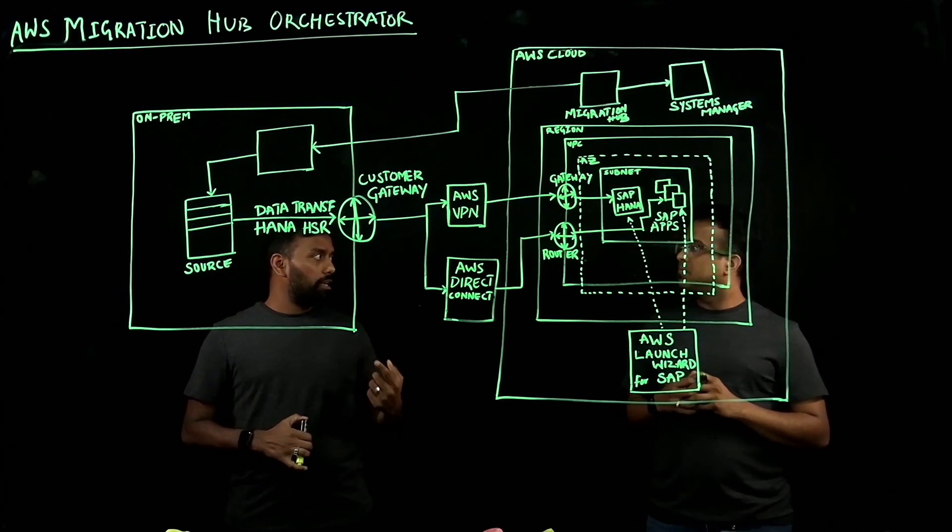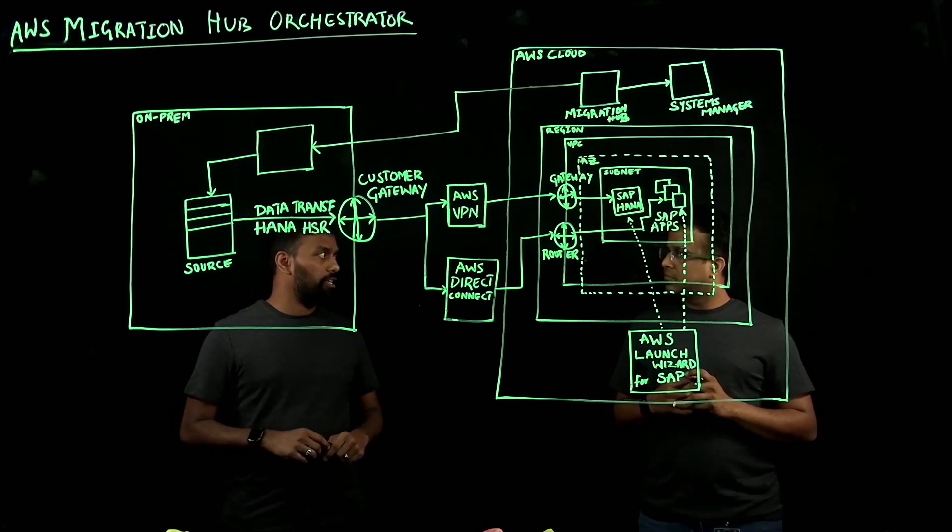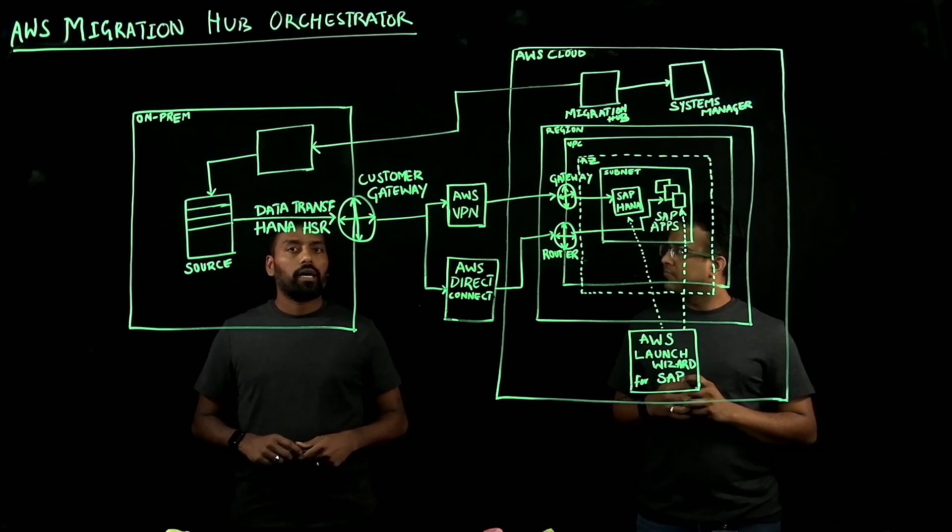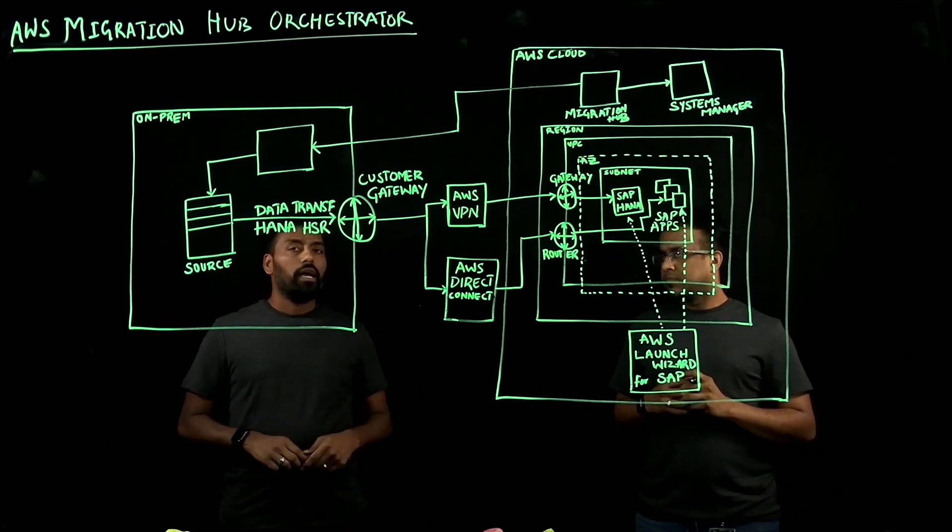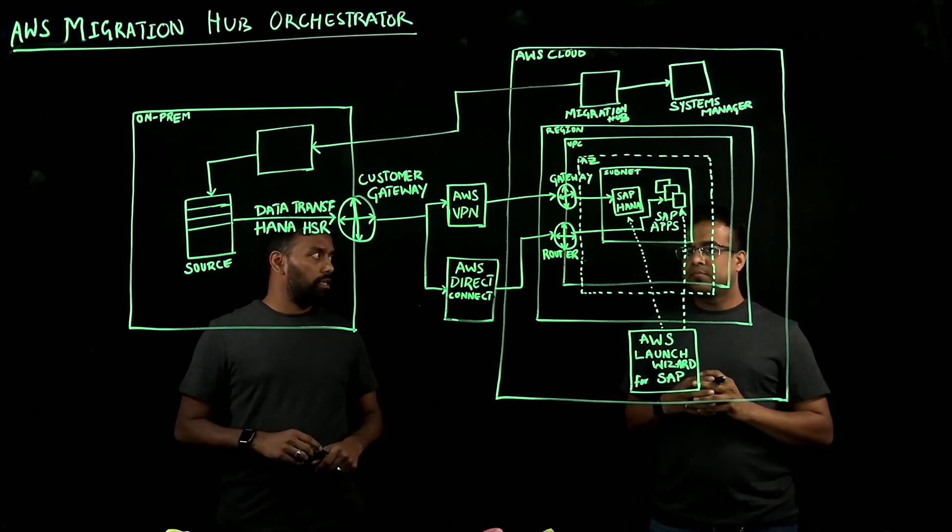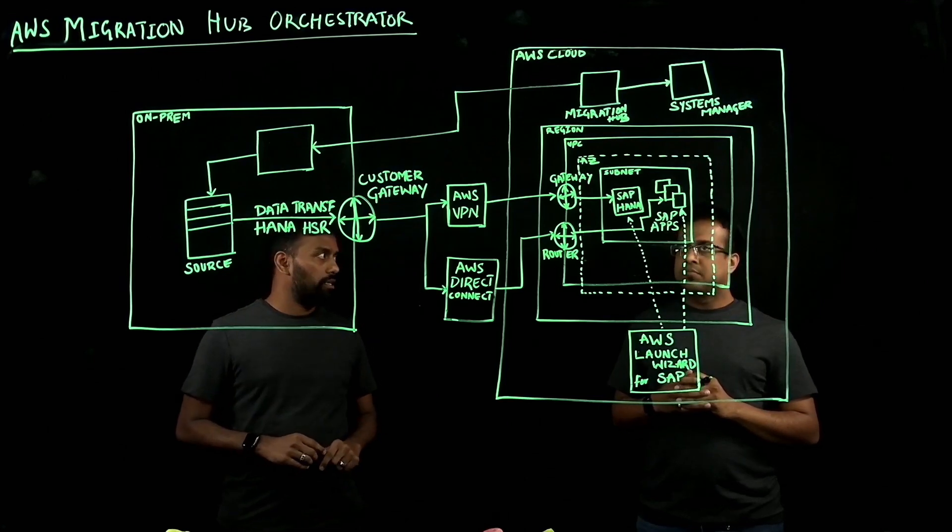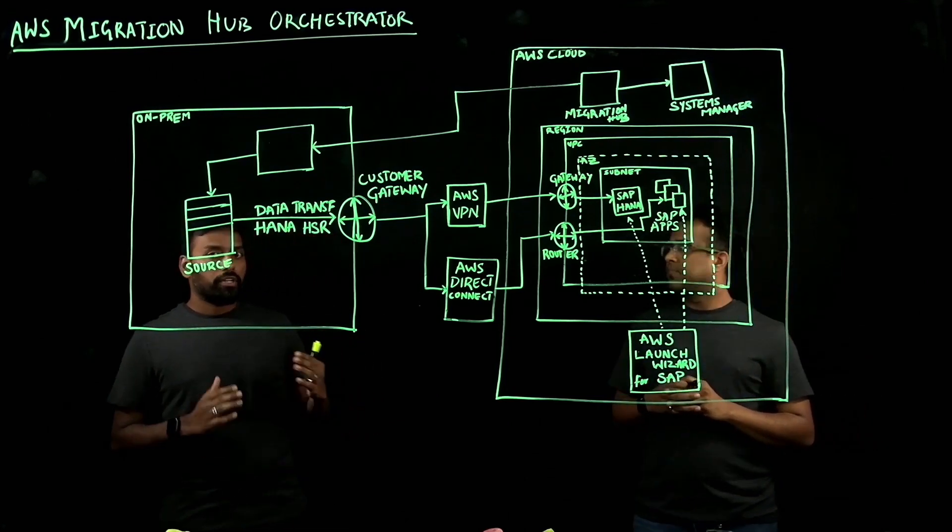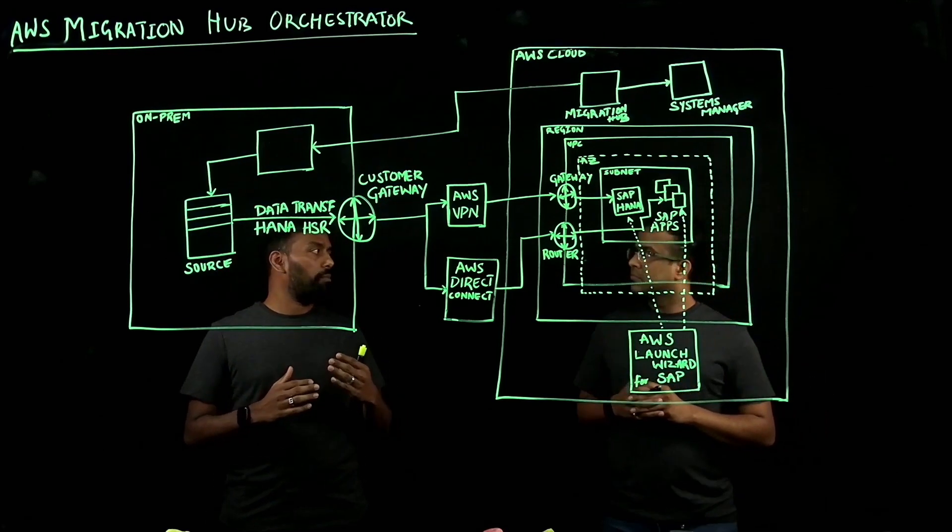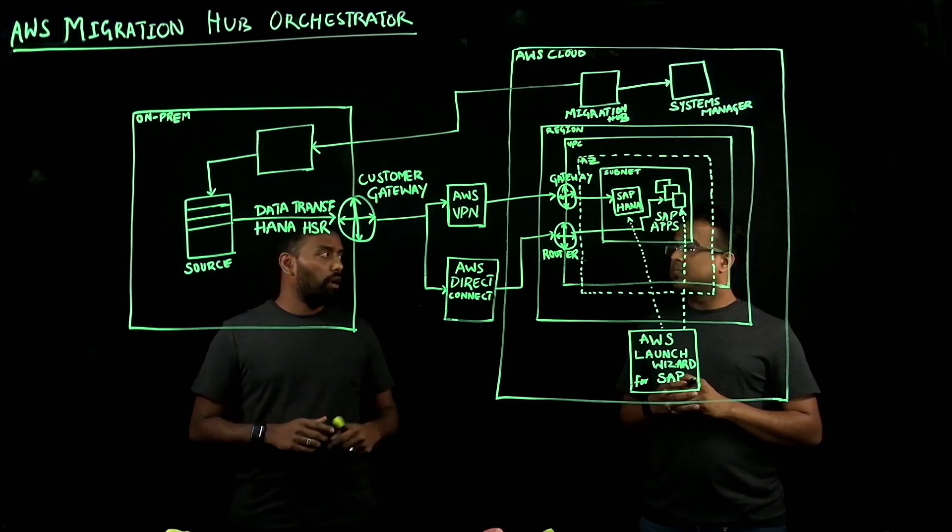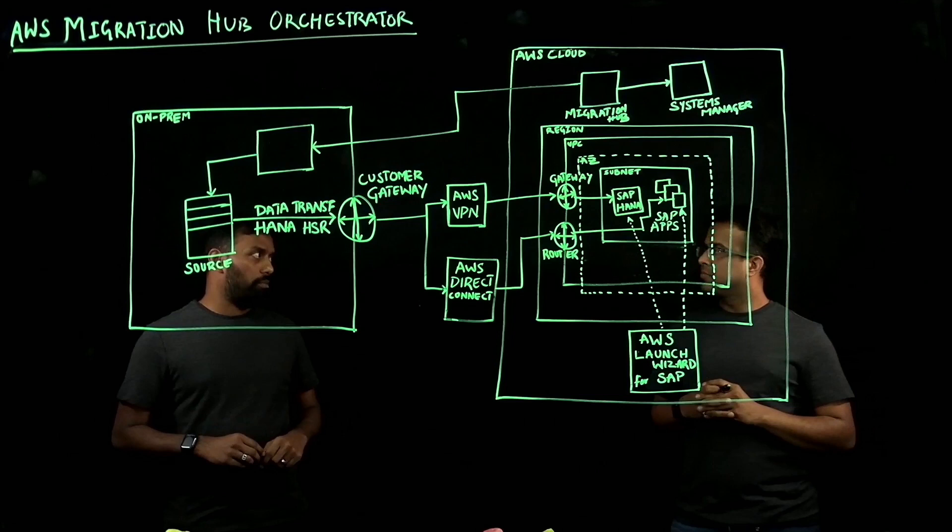The first template is for SAP Netweaver-based applications for HANA databases. It uses HANA system replication to migrate your database and it also lets you use AWS Launch Wizard to provision your target systems on AWS. And the other template uses AWS Application Migration Service, which is the erstwhile Cloud Endure, to let you migrate your custom applications as well onto AWS.